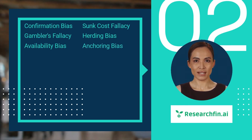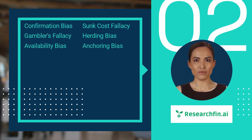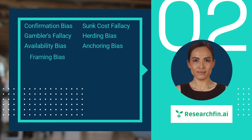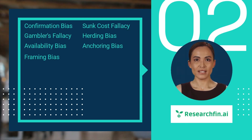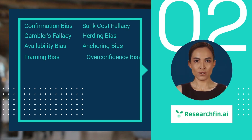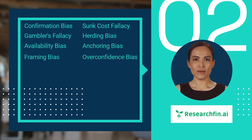Anchoring bias is the tendency to rely too heavily on the first piece of information we receive when making a decision. Framing bias is the tendency to make decisions based on how a problem is presented, rather than the facts of the problem. Overconfidence bias is the tendency to overestimate our abilities and knowledge.